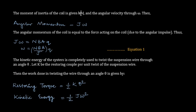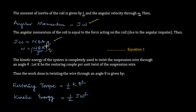The moment of inertia is defined as J, and the angular velocity is ω. The angular momentum is given by J·ω. Since this angular momentum is due to the angular impulse, the two can be equated: J·ω = N·B·A·Q, or ω = (N·B·A / J)·Q. This is considered equation number 1.